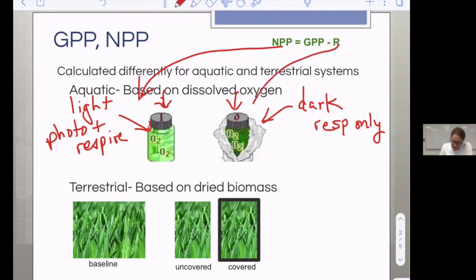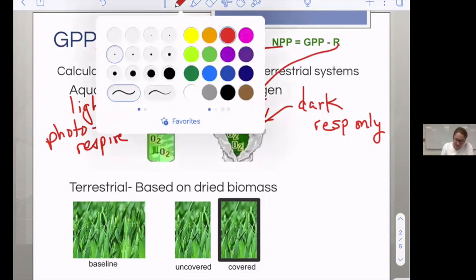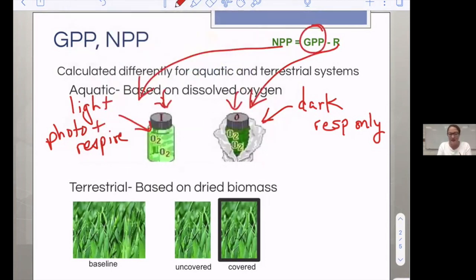For respiration only, that's going to be the one that's in the dark. And this will be cleared up in some later videos, but gross primary productivity is something we're going to calculate from the others.